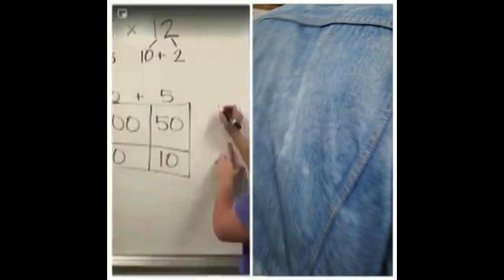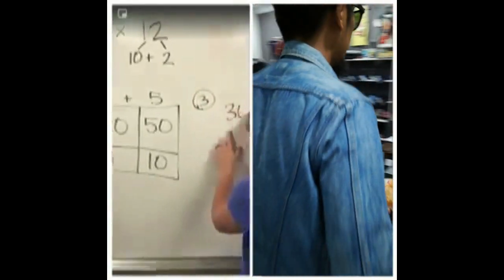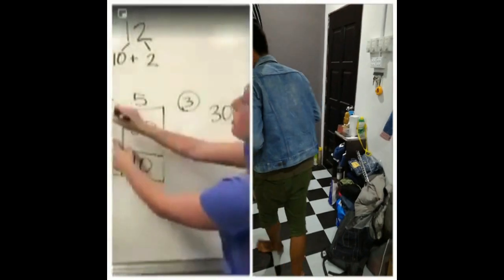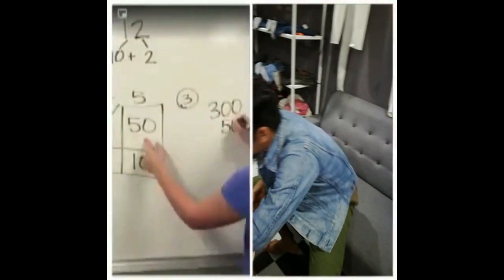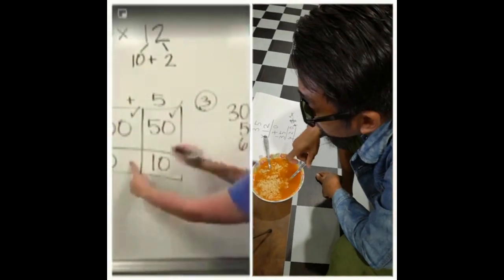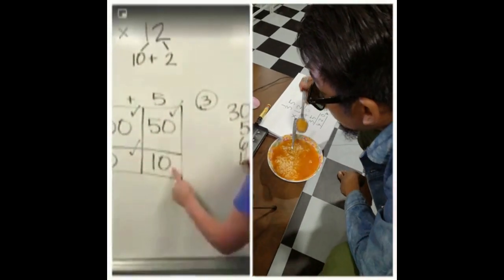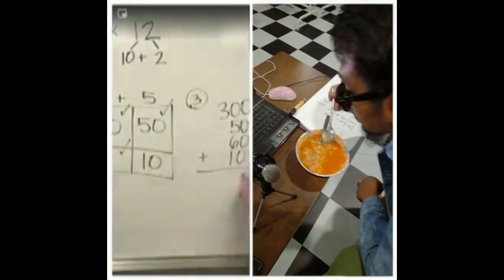So over here I'm going to add 300, and I like to check them off as I go. 50, 60, and 10. Make sure you line up your places too.